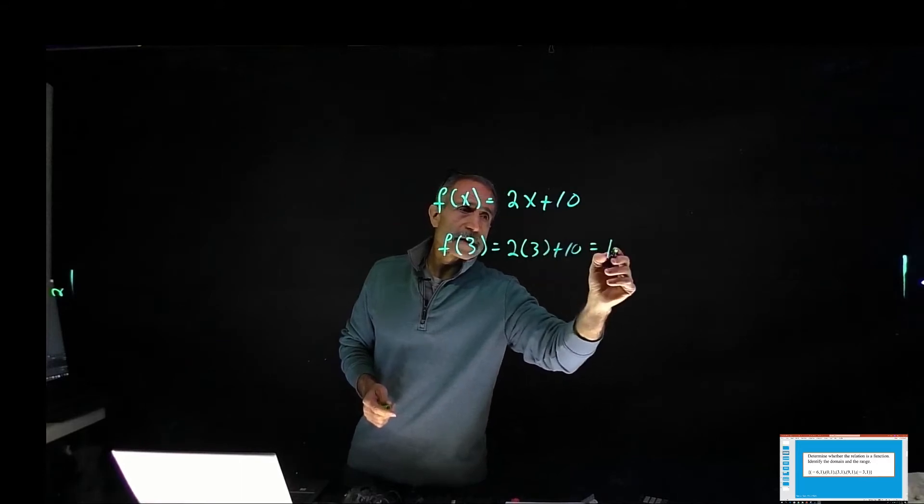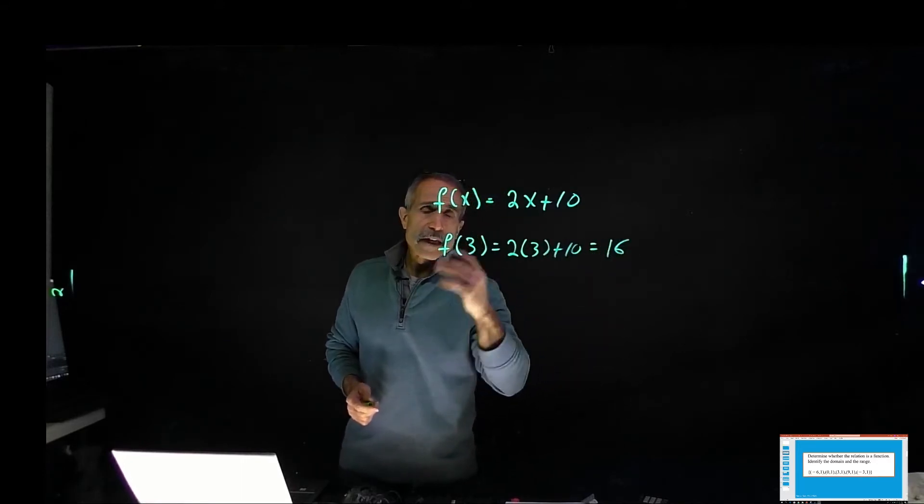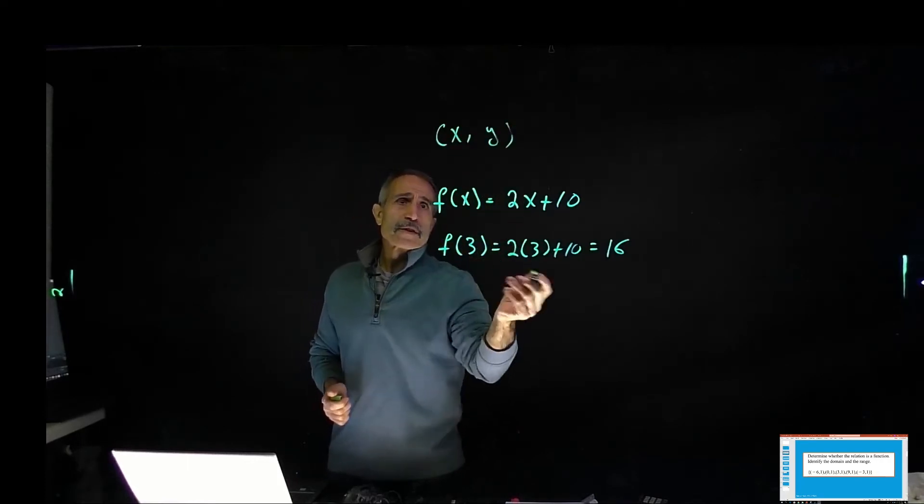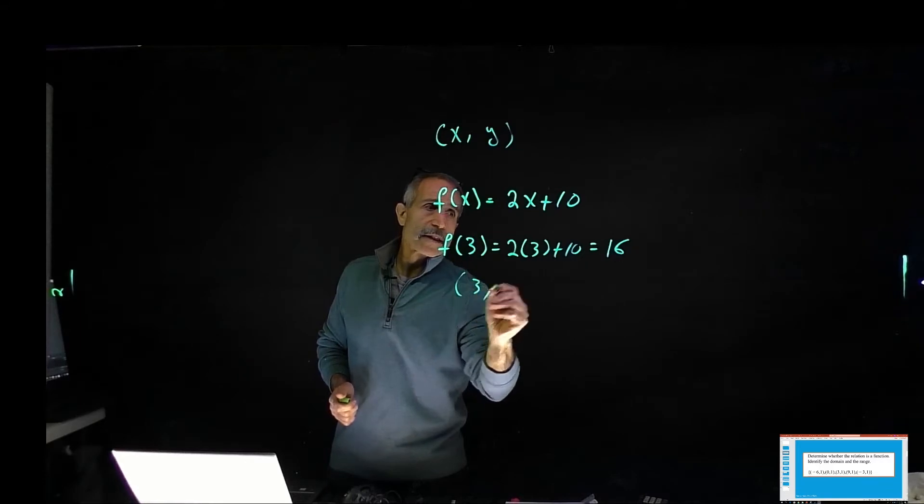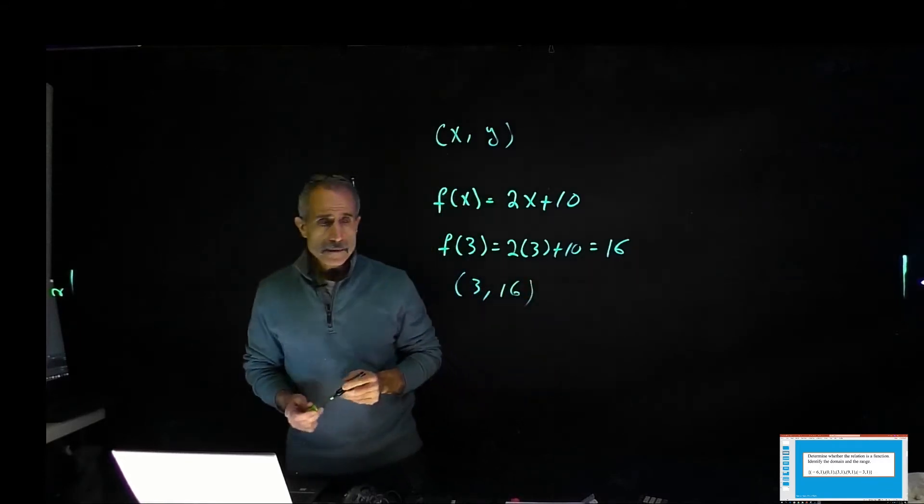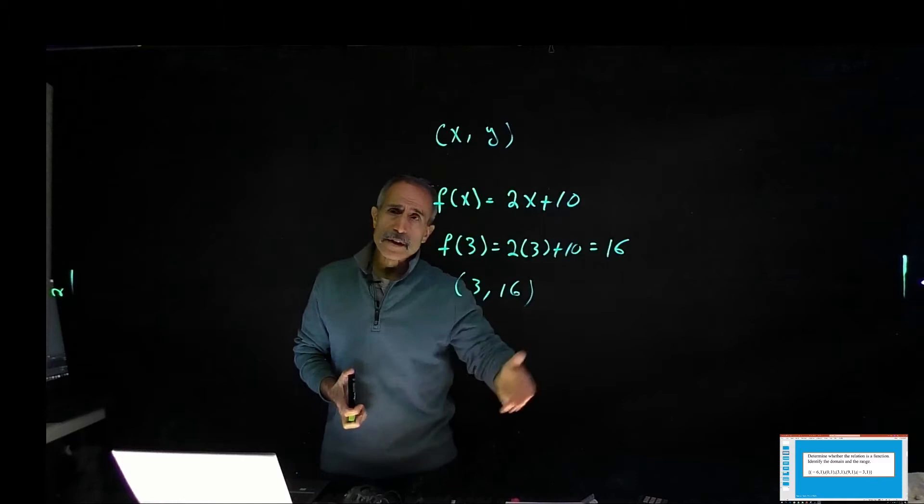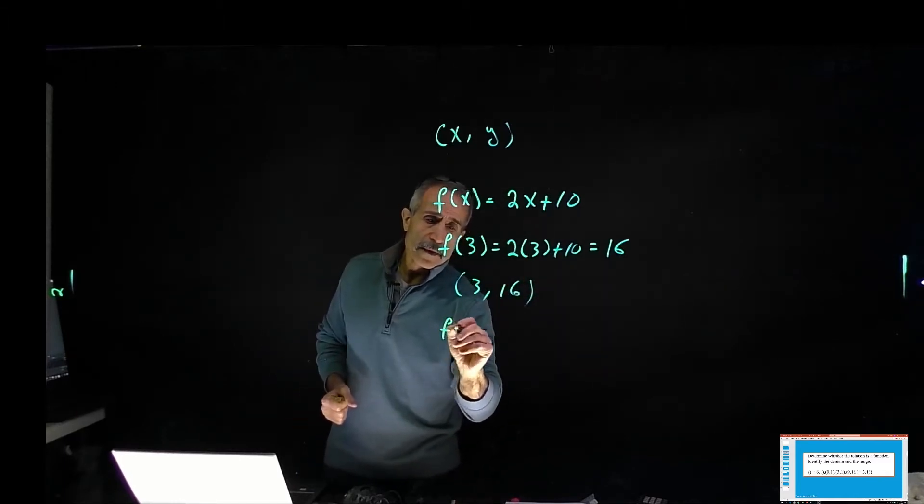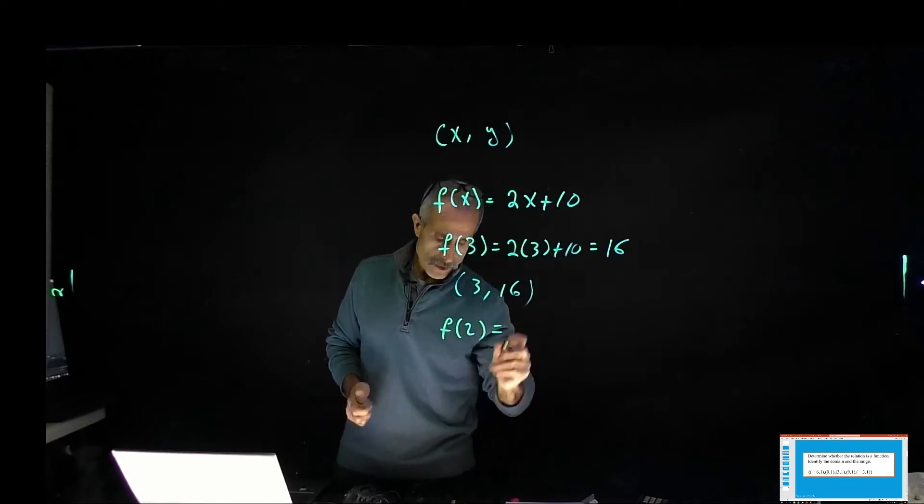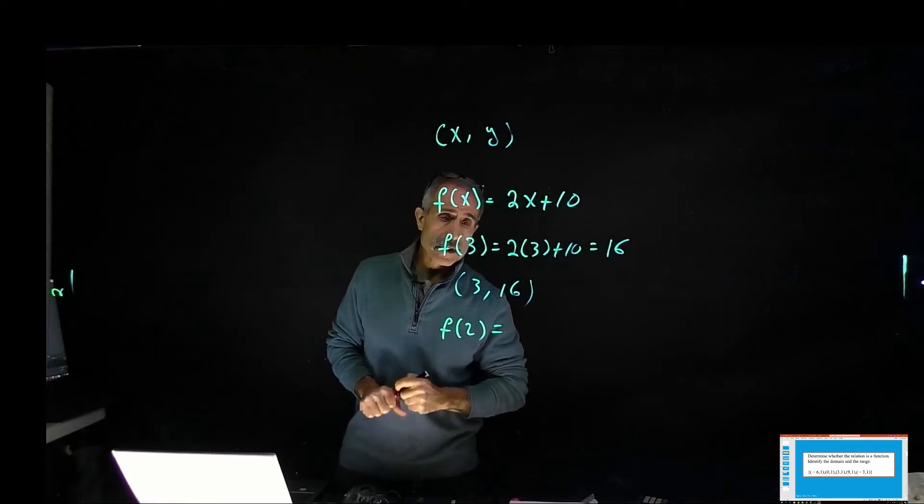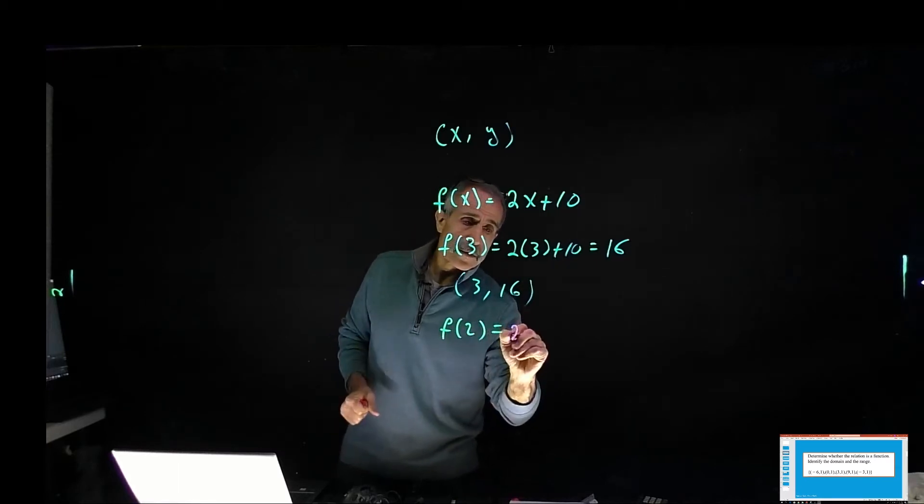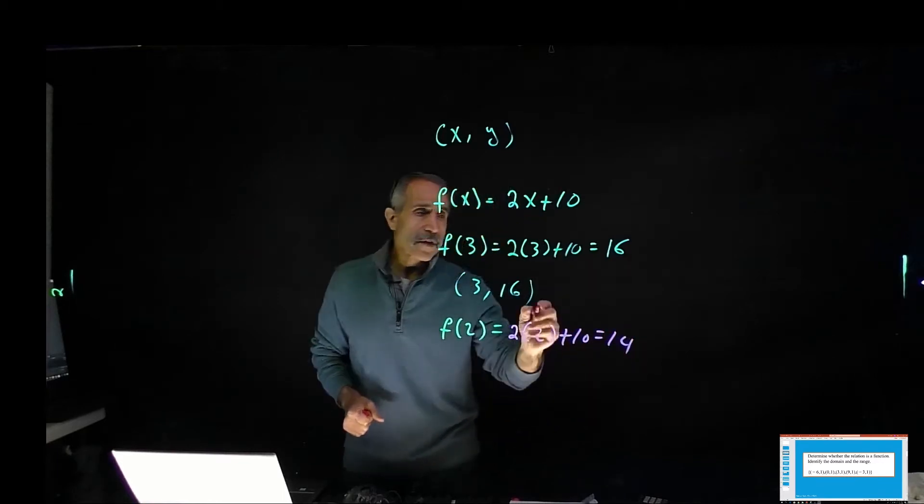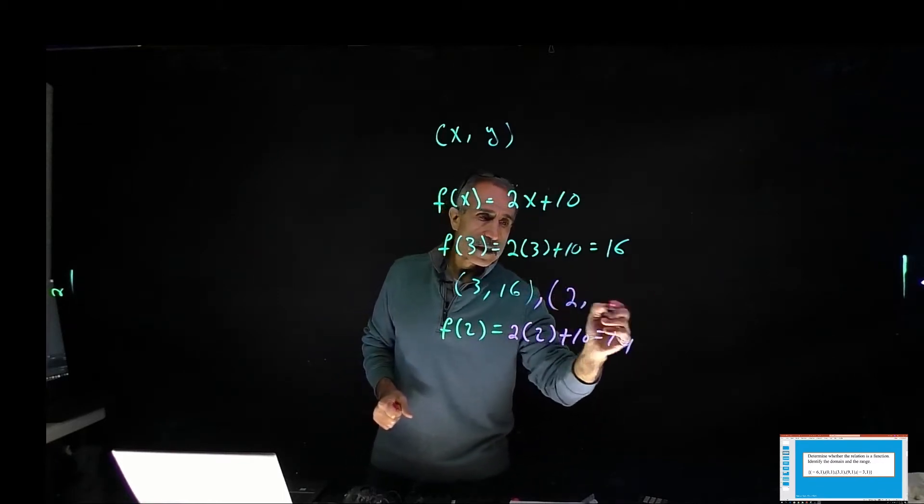So that gives me about 16. In a table I want to show, you usually have x and y, and you show these results as 3 and 16. We can put another point in there. Let's do another one, for example, make it f of 2. That will be 2 times 2 plus 10, and that's 14.